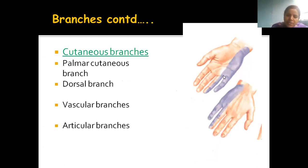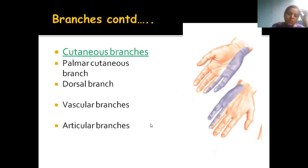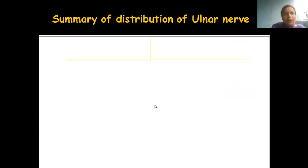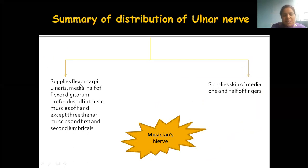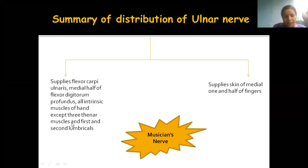For cutaneous branches, what is shaded in blue is the area supplied. The palmar cutaneous branch gives nerve supply to one and a half digits from the palmar aspect, and one and a half digits from the dorsal aspect. Summary: in the forearm — flexor carpi ulnaris and medial half of flexor digitorum profundus. In the hand — all intrinsic muscles except three thenar muscles of the thumb region and the first two lumbricals.